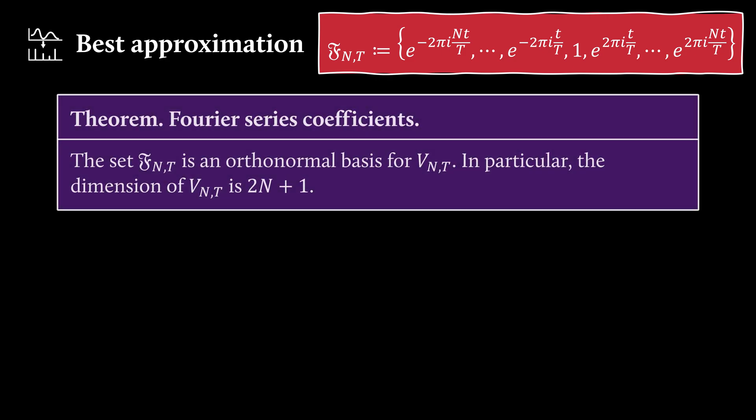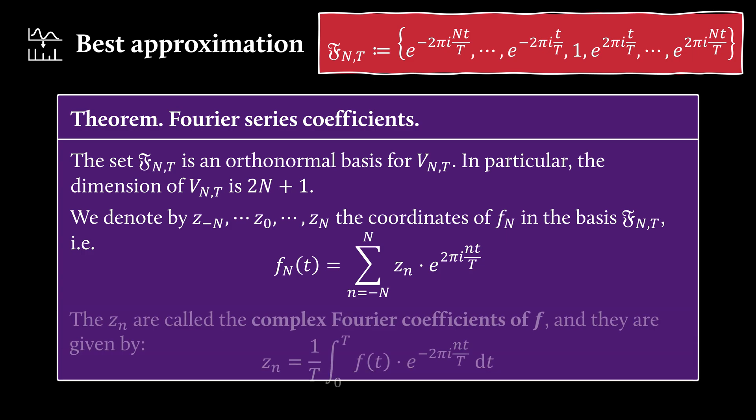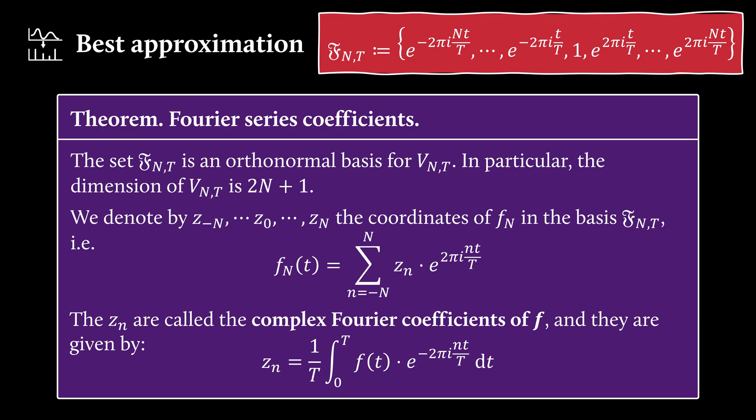And with this in mind, we can formulate our Fourier series coefficient theorem. It tells us that the set we've already discussed is an orthonormal basis for vₙₜ. In particular, the dimension of vₙₜ is 2n plus 1, as we have 2n plus 1 functions. And then we denote by Zₙ the coordinates of fₙ in the basis of these functions. So we have this linear combination, where Zₙ are the complex Fourier coefficients of f, and they are given by the formula we've just calculated.